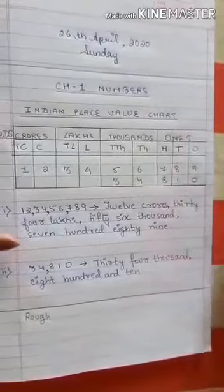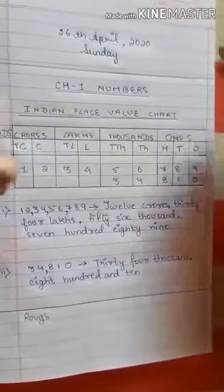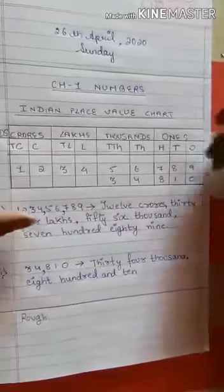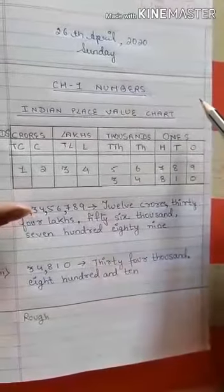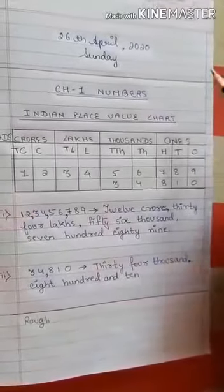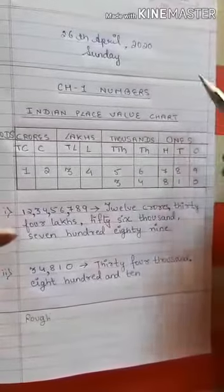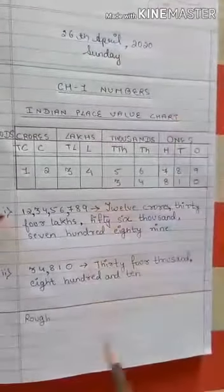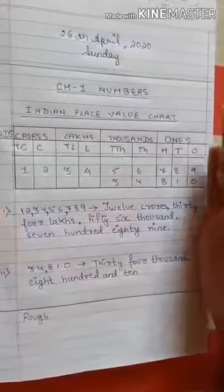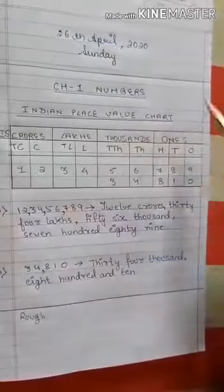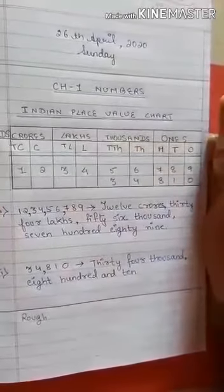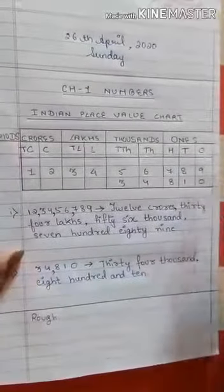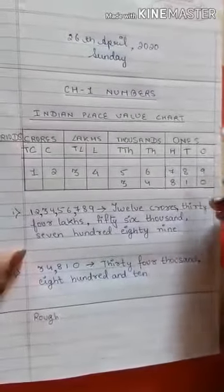You remember I had already shared a video with you explaining how to get your copies ready for the chapter. This is chapter one — you have to do it in your exercise book. Get your copies ready, write the date and the day, draw the rough column, and draw the Indian place value chart the same way I have done it.